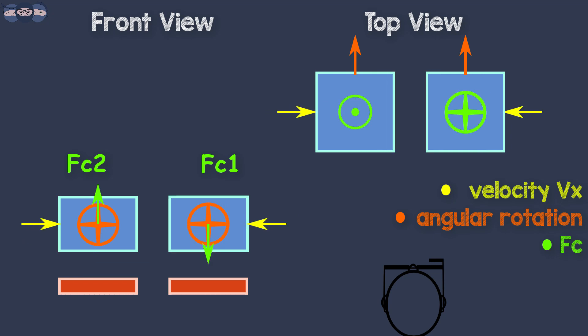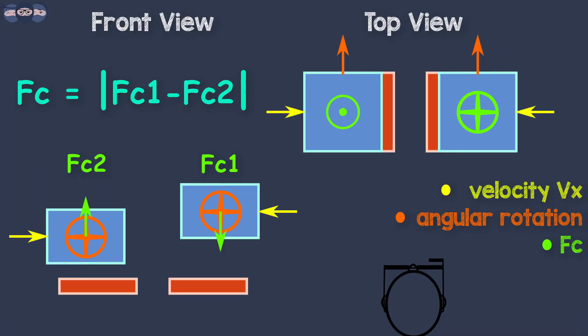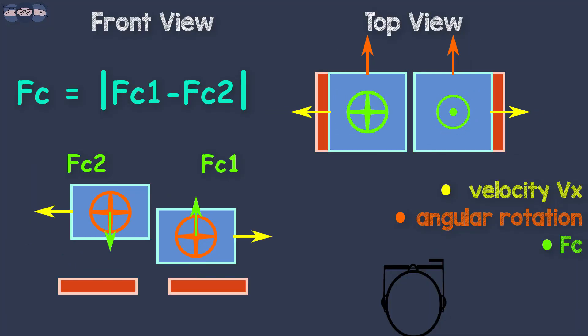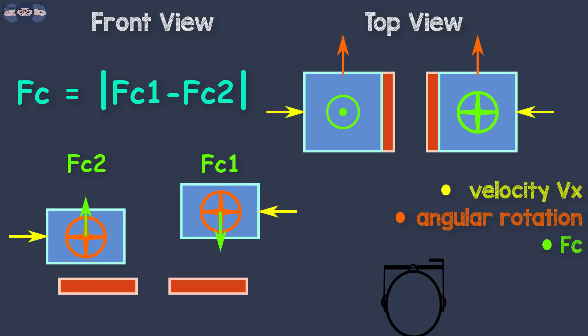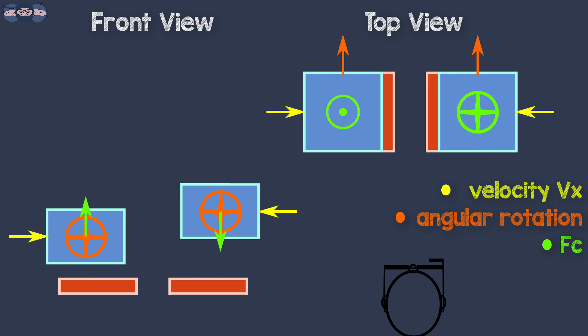One can visualize it easily from the animation shown. The final value is taken by finding the difference of measured acceleration of the Coriolis force. As the acceleration is a vector quantity and both the accelerations are in opposite directions, they get added up when they are subtracted. As a result, any other unwanted forces acting on the system can be easily neglected and they do not affect the measurement.